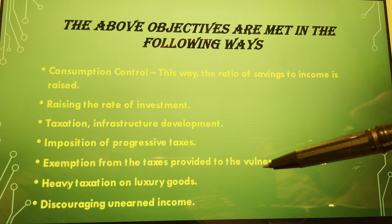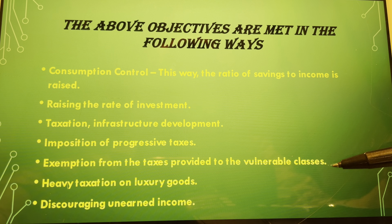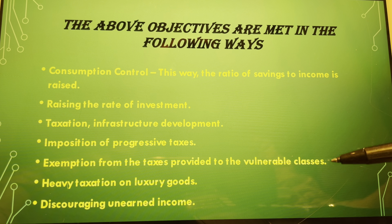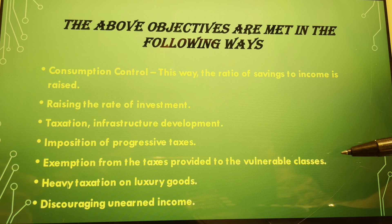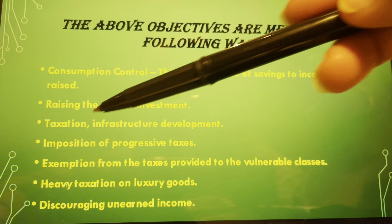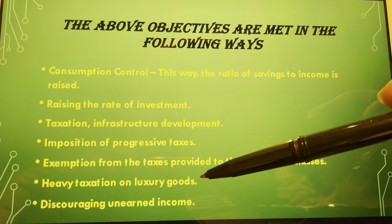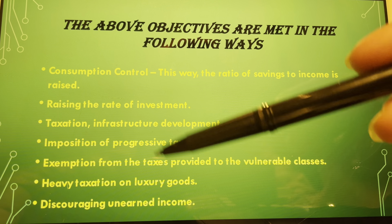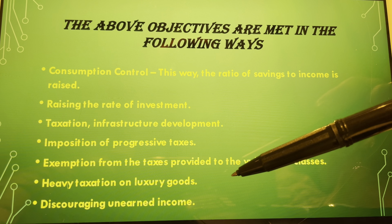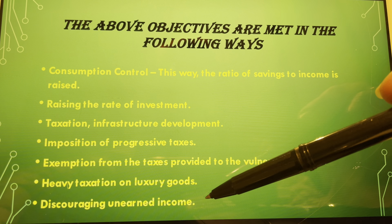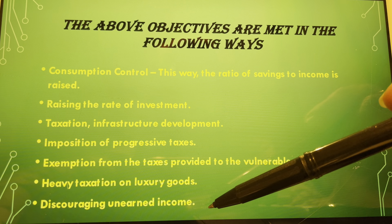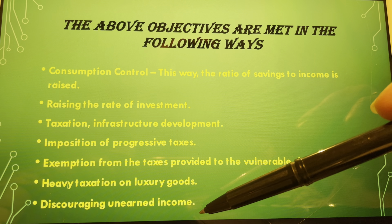Exemptions from taxes are provided to vulnerable classes — those with low or no income who are not in a position to pay taxes. Heavy taxation is imposed on luxury goods, which are normally used by higher income groups. Discouraging unearned income is also one of the objectives of fiscal policy, so that unearned income is decreased.